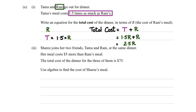Okay, now having a look at part two. Shari joins the two friends, Tama and Rani, at the same dinner. Her meal costs $5 more than Rani's meal. Now they've got, again, total cost of dinner for the three of them is $75. And you've got to figure out how much Shari's meal is. So I guess the first thing we need to do is come up with some sort of equation.